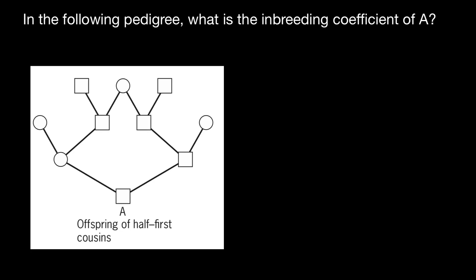Let me show you an example of who is going to be the common ancestor of person A. Actually, only one person here can become an ancestor, and this is going to be the great-grandmother, because only she can pass the same allele from both the mother's side and the father's side of person A. The great-grandfather can only pass his alleles through one side, so he cannot pass two identical alleles.